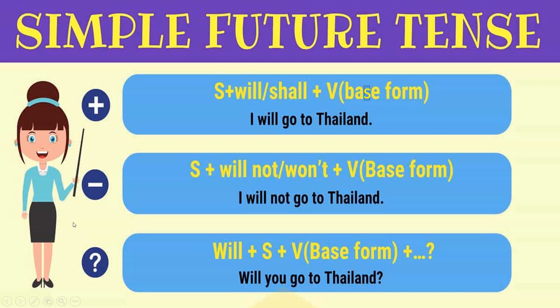The question mark means interrogative sentence. For interrogative, you write 'will' first, then the subject, then the root form of the verb — similar to how in simple present we wrote 'do' or 'does,' and in simple past we used 'did.' In simple future tense, use 'will' plus subject plus root form of verb. For example: 'Will you go to Thailand?'